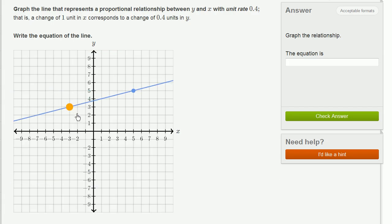So we had two points. One was the point 0, 0. When x is 0, y is 0. And when x is 5, y is 0.4 times that, so y is equal to 2. And we said the equation is y is equal to 0.4 times x. So let's check our answer.